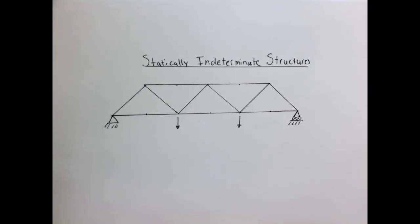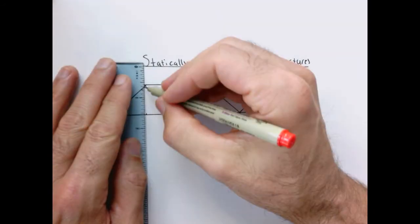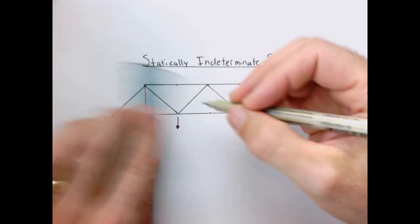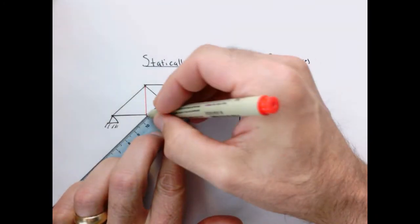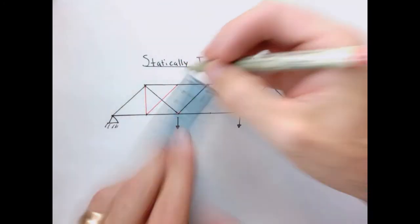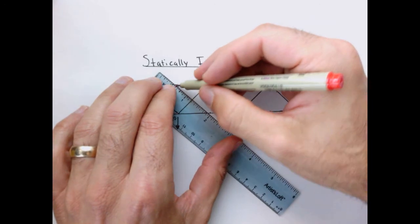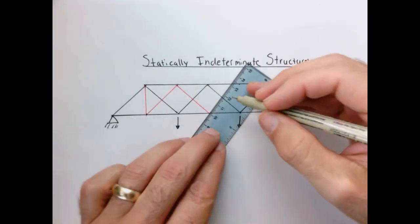Now imagine modifying this truss by adding some new elements sketched in red. The question is: how do we compute the forces in the members of this truss?